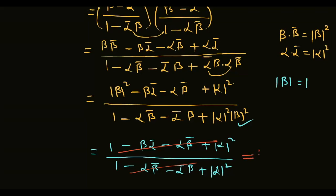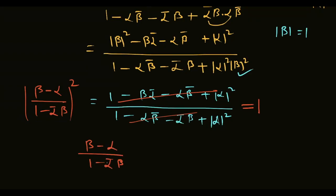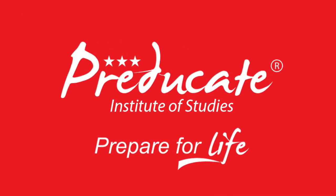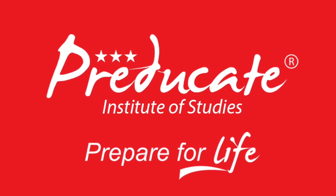और equal to 1 आ जाएगा। Modulus of (beta minus alpha) upon (1 minus alpha conjugate beta), whole square equal to 1. Therefore, modulus of (beta minus alpha) upon (1 minus alpha conjugate beta) equal to 1. इसी की value find करनी थी। और questions solve करेंगे next video में। Thank you for watching my videos.